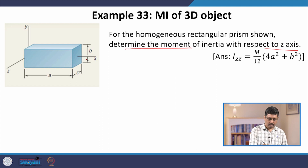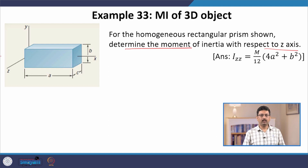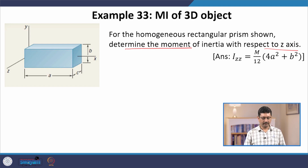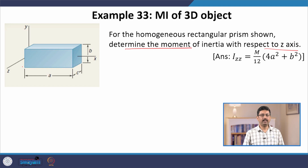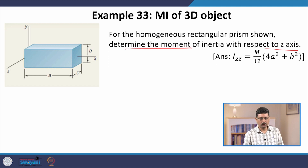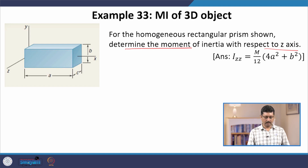The origin is such that the x axis is passing through the middle of the prism, so the x axis is indeed an axis of symmetry for this figure. But the y axis and z axis are not passing through the middle of the prism, so y axis and z axis are not axes of symmetry.